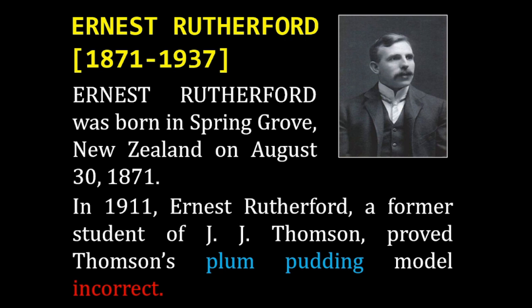In 1911, Ernest Rutherford, a former student of Joseph John Thomson, proved Thomson's plum pudding model incorrect.